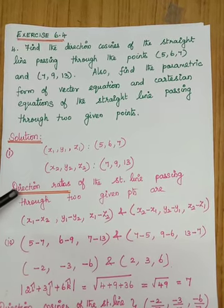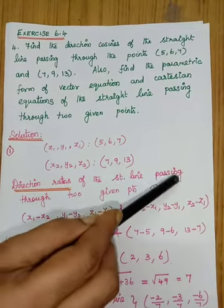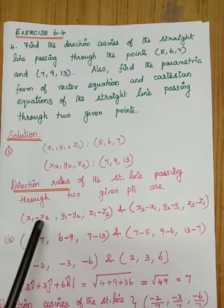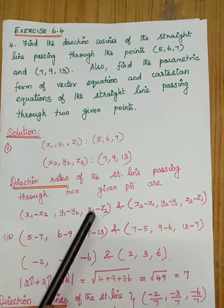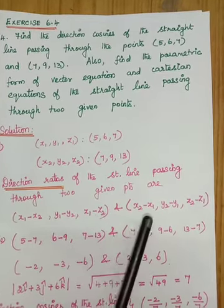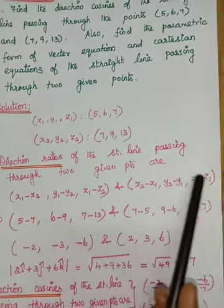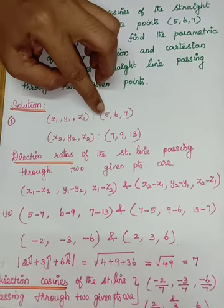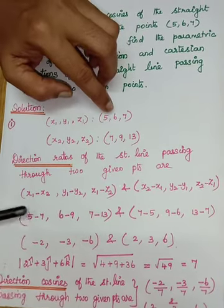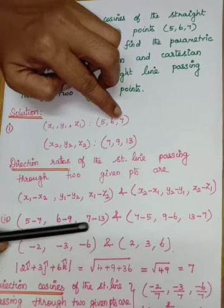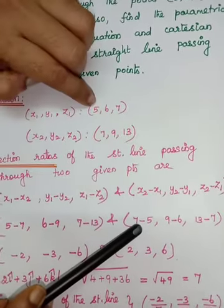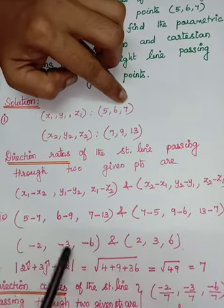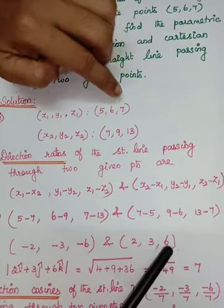The direction ratios of the straight line passing through two given points are: (x1 minus x2, y1 minus y2, z1 minus z2) or (x2 minus x1, y2 minus y1, z2 minus z1). So here: 5 minus 7, 6 minus 9, 7 minus 13, or otherwise 7 minus 5, 9 minus 6, 13 minus 7.